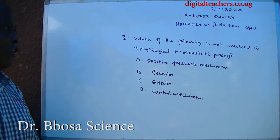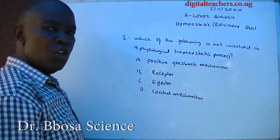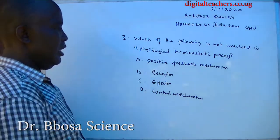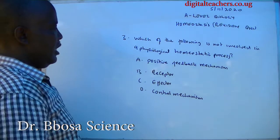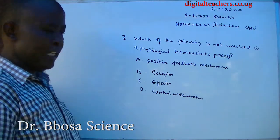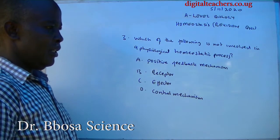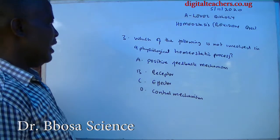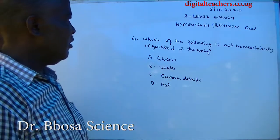Number three: which of the following is not involved in a physiological homeostatic process? A. Positive feedback, B. Receptor, C. Effector, D. Control mechanism. The answer is A: Positive feedback.